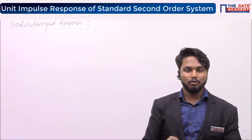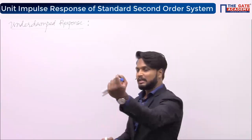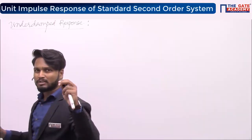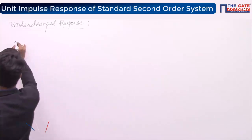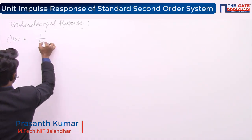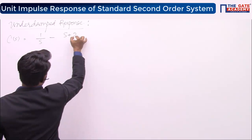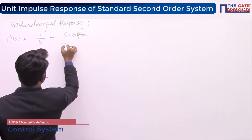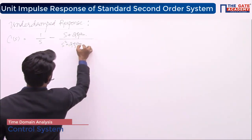We have to see how our under-damped response is going to be. The value of C(s) you got in the previous step — I asked you to note down C(s). We don't have sufficient space on the board here. C(s) is equal to 1 upon s, minus s plus 2ζωn, divided by s² plus 2ζωn·s plus ωn².